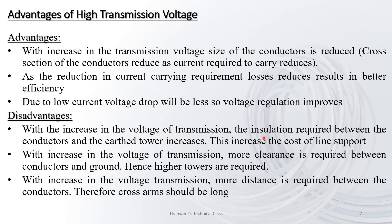Disadvantage: with the increase in transmission voltage, the insulation required between the conductors and the earth towers increases. Higher voltage requires greater insulation, increasing the cost of line support. With increase in voltage, more clearance is required between conductors and the ground, so higher towers are required. Cross arms should be longer as more distance is required between conductors.